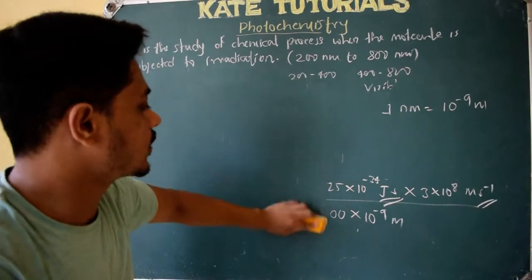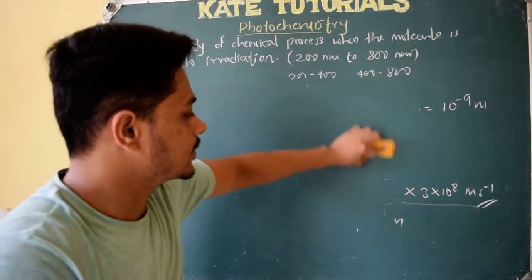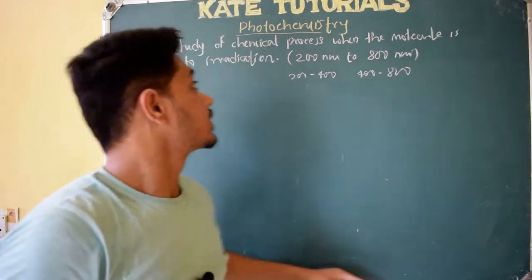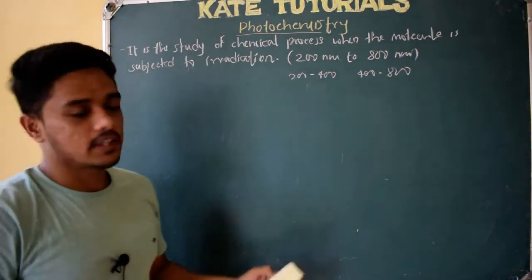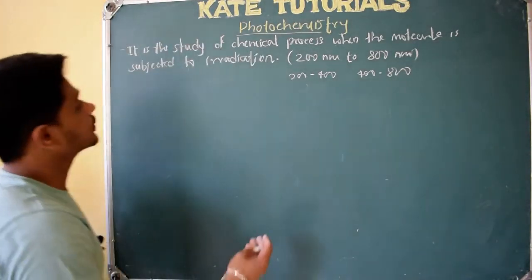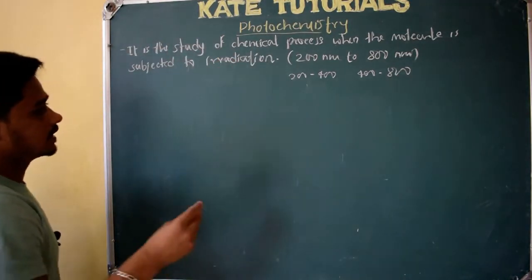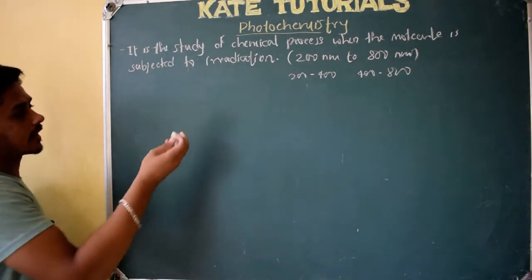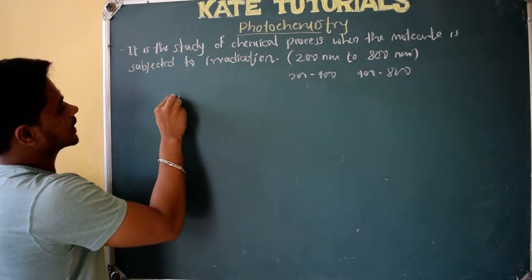We have discussed the principle of photochemistry, what photochemical reactions are, and the radiations involved. Now let us distinguish between photochemical reactions and thermal reactions, as there will be important differences.